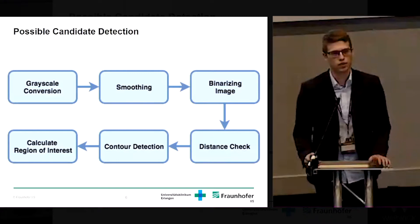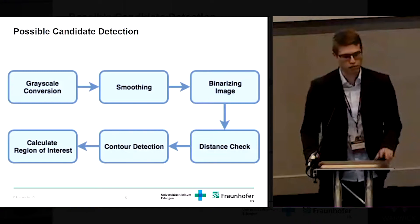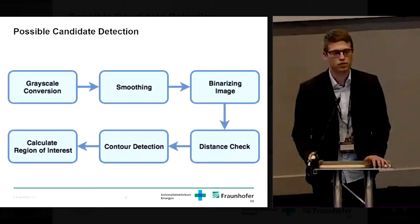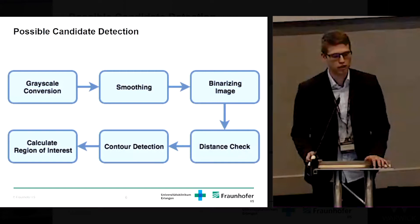The approach consists of first a classical image processing step and then a CNN. For the classical image analysis, we first use the blue channel of the image, smooth it with a median filter, and binarize it with the OTSU threshold algorithm. We then perform a distance check to see if the tumor buds are connected to a cluster or to the main tissue using morphological operations, detect contours based on the binarized images, and calculate our regions of interest.